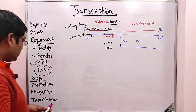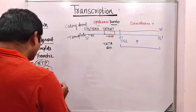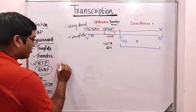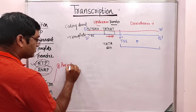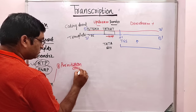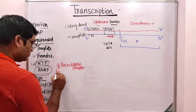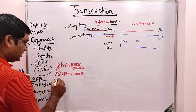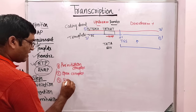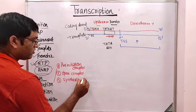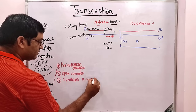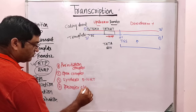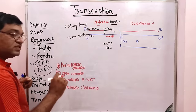Now the steps in the transcription process. In initiation, the first step is formation of the closed complex or pre-initiation complex. The second step is open complex formation. The third one is synthesis of 5 to 10 nucleotides of RNA. And the fourth one is promoter clearance. These are the steps in the initiation of transcription.